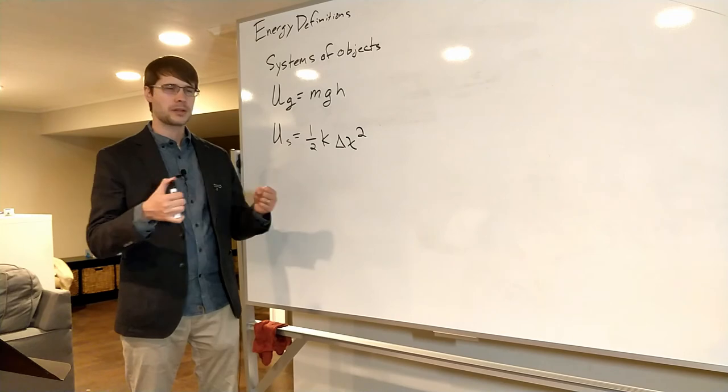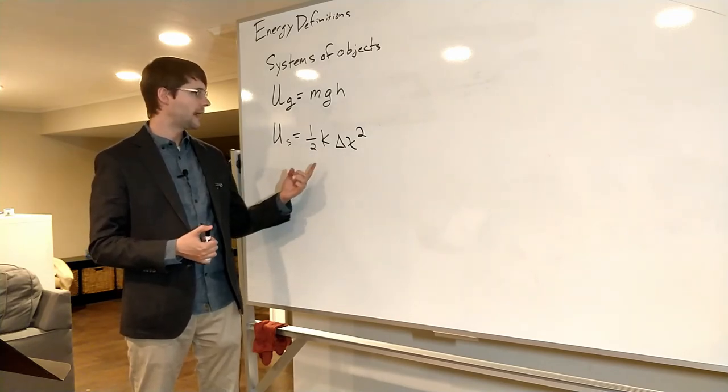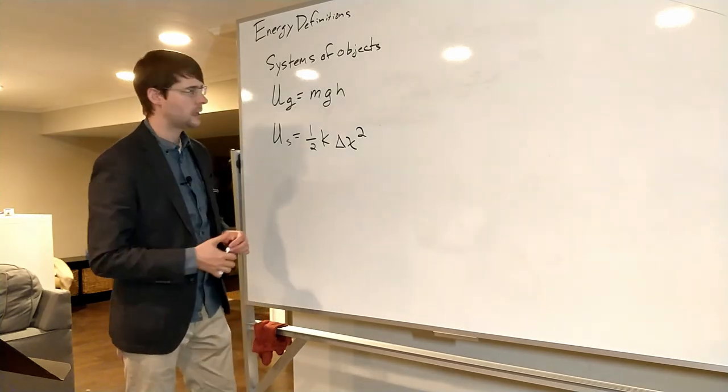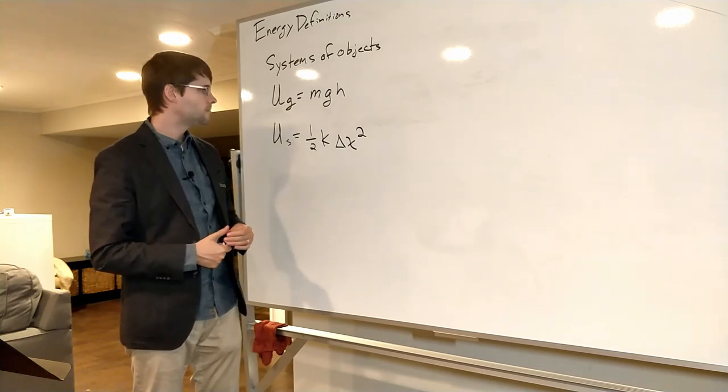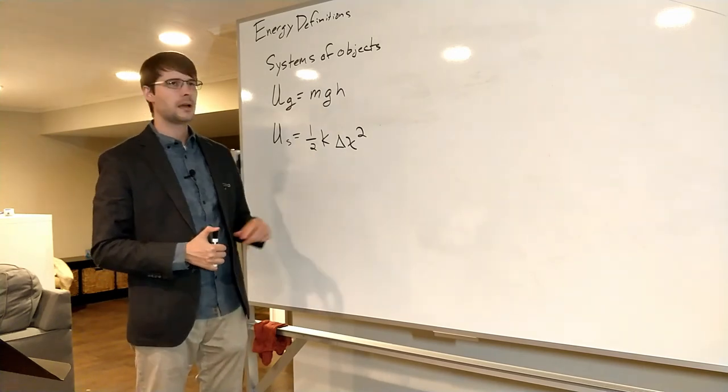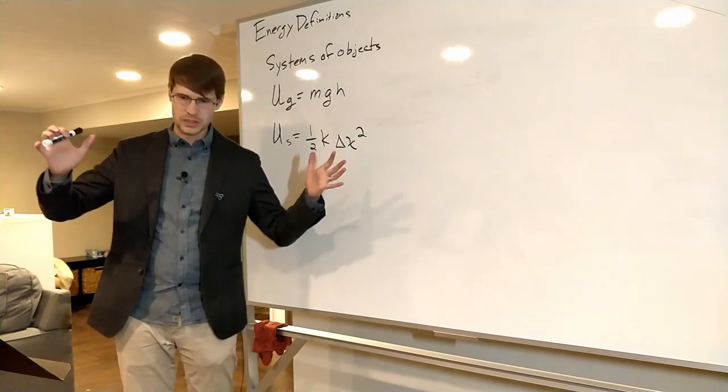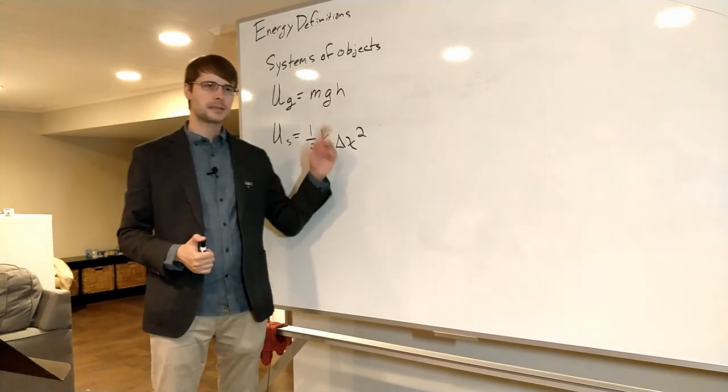Here we've got U = ½k(Δx)². K is equal to the spring constant of the spring—that's a physical constant of the entire spring as it is, in units of newtons per meter. It's how much force is required to squish it by one meter or stretch it by one meter.